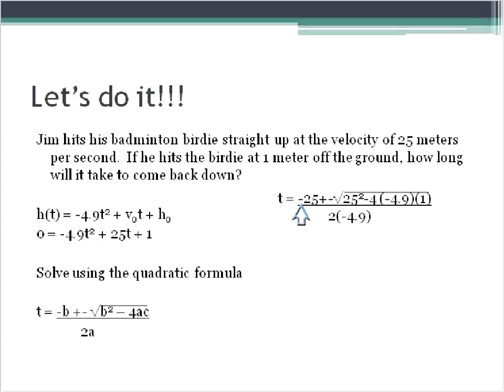Let's go ahead and do that. So negative 25 plus or minus the square root of 25 squared minus 4 times negative 4.9 times 1. And that's all over 2 times negative 4.9. 25 squared is 625 minus, and then I multiplied these together, 4 times negative 4.9 times 1, and that will give me a negative 19.6. 625 minus negative 19.6 is the same as saying 625 plus 19.6, and that will give us the value of 644.6.